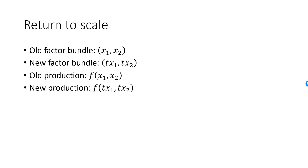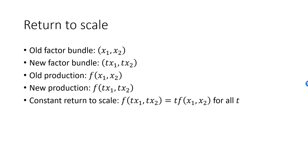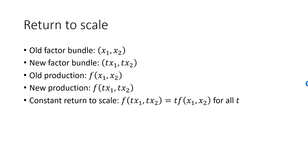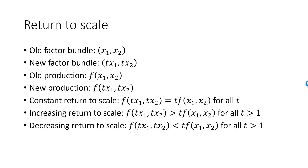Our new production level with the scaled bundle is t times the old level of production for all values of t. If you find this equation hard to decipher, replace t with the number 2. The condition for constant return to scale is the same as saying that f is homogeneous of degree 1. The firm produces under increasing return to scale if the new level of production is strictly greater than t times the old level for all t strictly greater than 1. Finally, if the new production level is less than t times the old level for all t greater than 1, then we have decreasing return to scale.